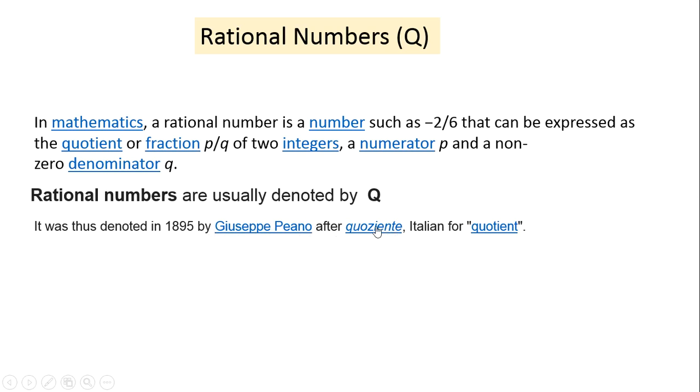And what was quotient in Italian? It is quoziente. So for Italian, quotient is quoziente. That's the reason they have put up Q here. So Q is nothing but